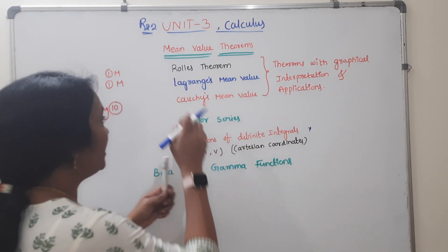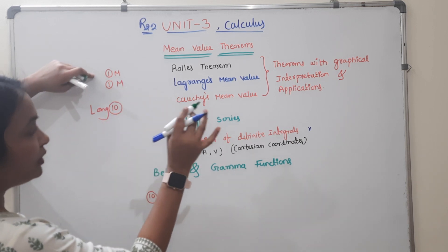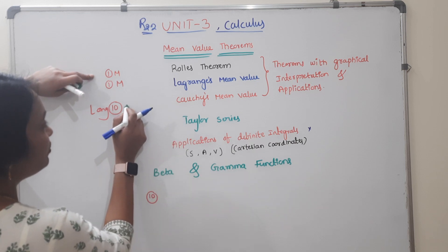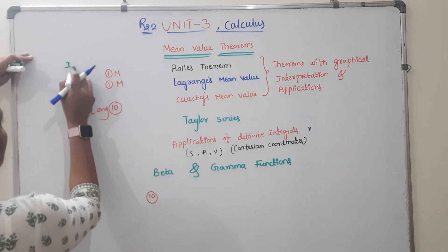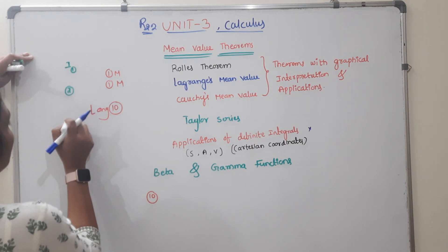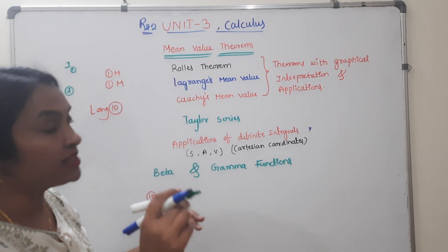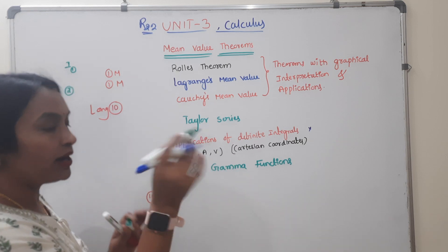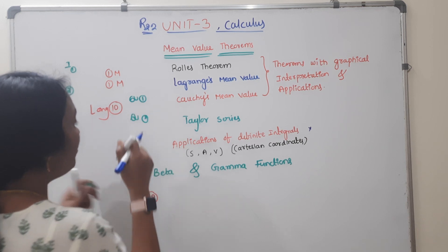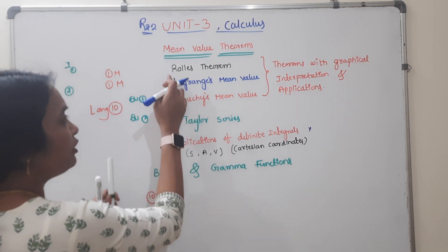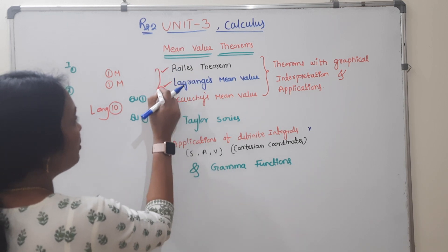I will show you the question paper structure. In the third unit, there is a long question and a short question. Questions are numbered first through seventh. Every person has one question here — Rolle's, Lagrange's, Cauchy's — one question is compulsory. If you answer one question here, there is no question elsewhere. J and U are compulsory.